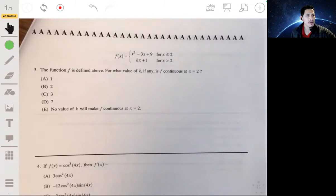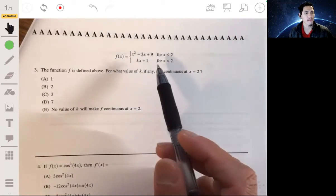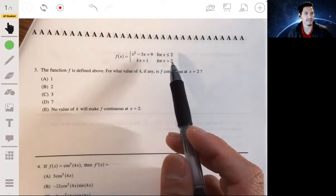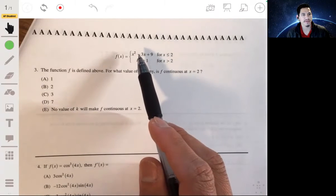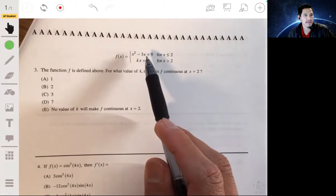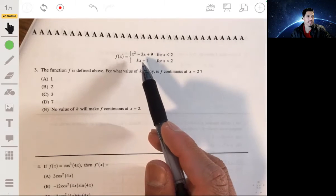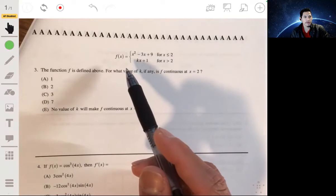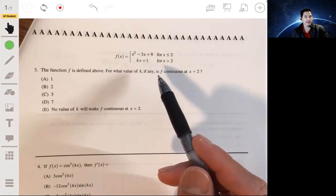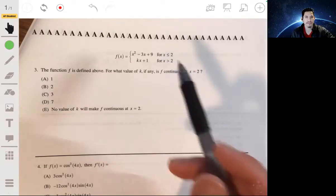Problem 3, we have the piecewise function broken up at the point x equals 2. On this first interval, it's going to be equal to x squared minus 3x plus 9, and after 2, it'll be equal to kx plus 1. We want to find a value of k, if it's possible, that we can make f continuous at x equals 2.